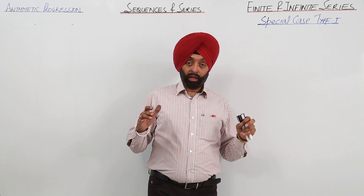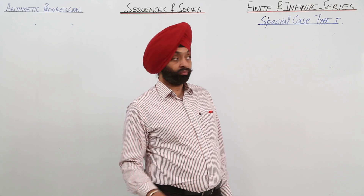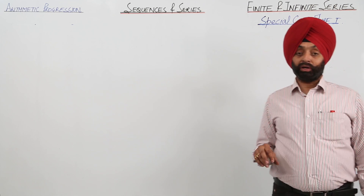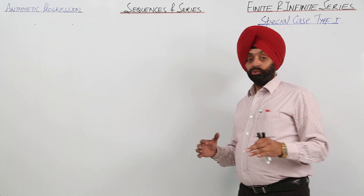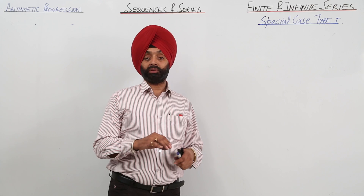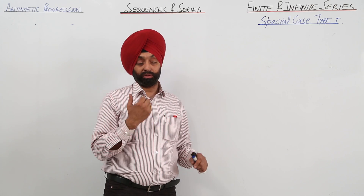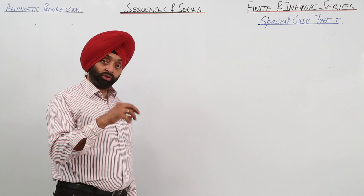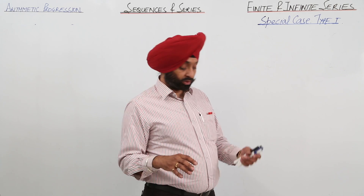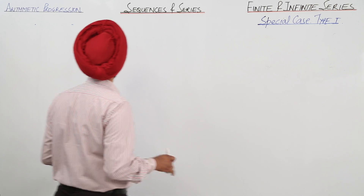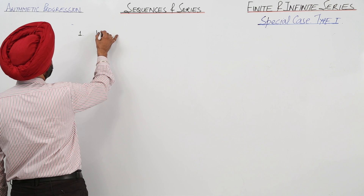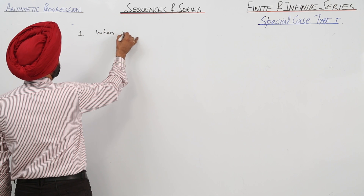Now let's discuss a few special cases. Special case type one — what to do if AP is given. First of all, a small recap. These are the two cases: one when the sum is given, and one when the sum is not given.